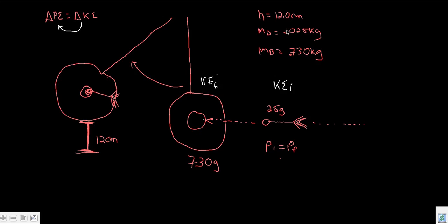Here's what we know: we have a height, we have the masses of each object, and that's all. We're going to have to start at the potential energy and work our way all the way backwards, because whatever height it rose came from the kinetic energy after the collision, which came from the dart's initial kinetic energy. To save time, we'll start at the final potential energy and move backwards.